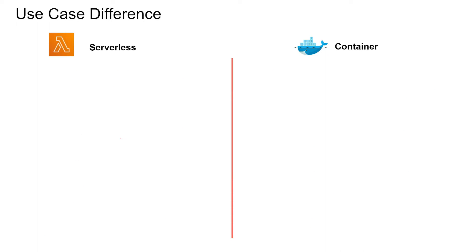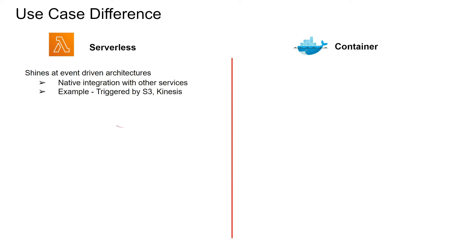Now let's take a look at the use case differences. Serverless shines at event-driven architectures and has native integration with other cloud services. For example, every time you put an object in S3 and want to do some processing, you can trigger a Lambda from that S3. Same way for Kinesis — every time a message arrives and you want to process it, it's very easy to trigger a Lambda.